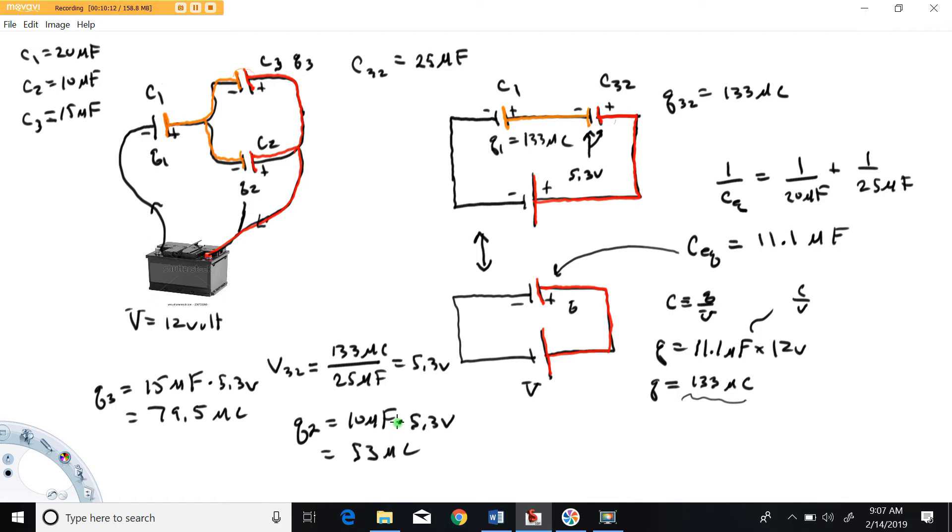All right. The very last thing we're going to calculate here is we're going to use the charge that we found on C1 to calculate the voltage across capacitor 1. I'll do this right here. So the voltage across 1 is going to equal charge 1 which we calculated somewhere, 133 microcoulombs, over C1, 20 microfarads. Somebody give me 133 over 20. 6.65 volts.